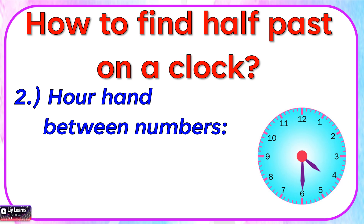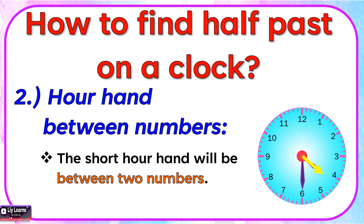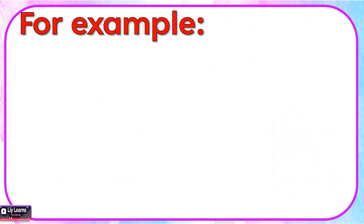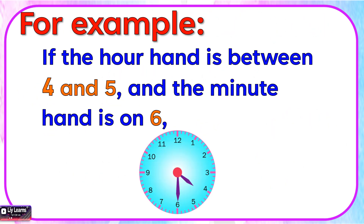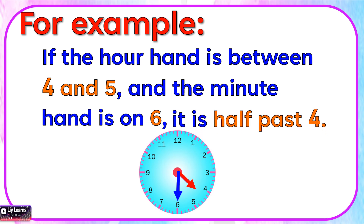The second step is Hour Hand Between Numbers. The short hour hand will be between two numbers. For example, if the hour hand is between 4 and 5 and the minute hand is on 6, it is half past 4.